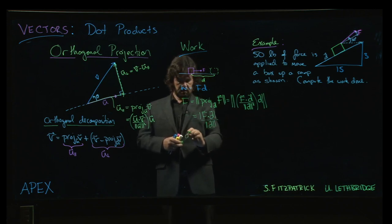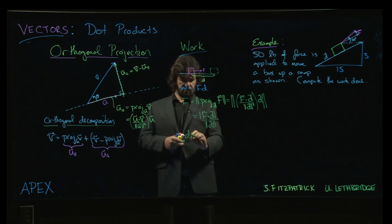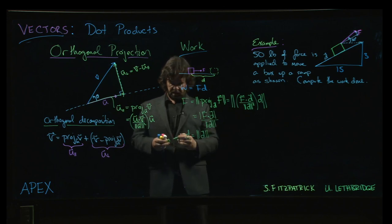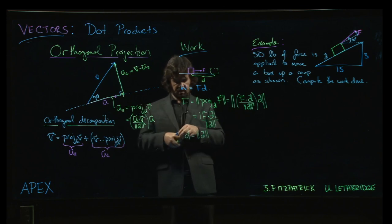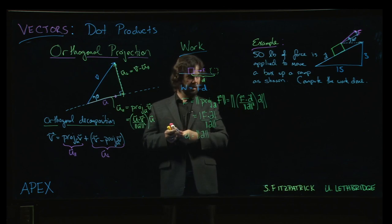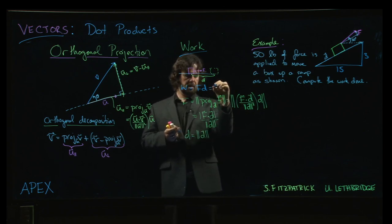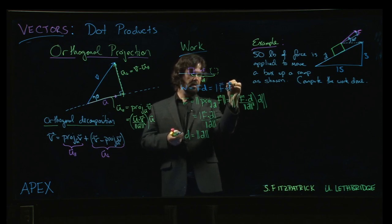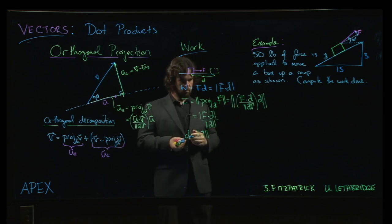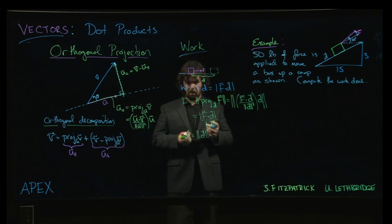So magnitude of D over magnitude D squared is just magnitude of D. And the distance traveled is just the magnitude of the displacement vector. And so what we get then is that the work in this sort of more general scenario would be the magnitude of that, or the absolute value of the product.